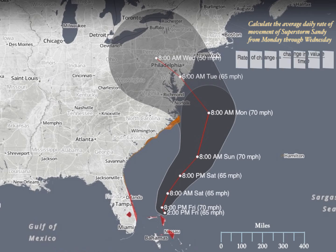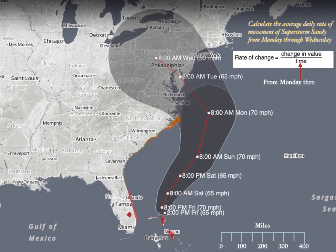Always go to that formula — look it up in your reference table and write it down. The time is easier to start with here because we're going from Monday through Wednesday and it asks for a daily rate of change. Since both readings are at 8am, it's just 2 days. 8am Monday to 8am Wednesday is exactly 2 days. That's the easy part; the more challenging part is calculating the change in distance.